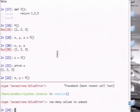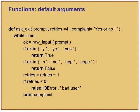Now we know how to create simple functions. Return just returns and you can put return anywhere inside a function; once it returns, it is out of that function. Here we look at what are called default arguments. I have a function which takes three arguments: prompt, retries, and complaint.